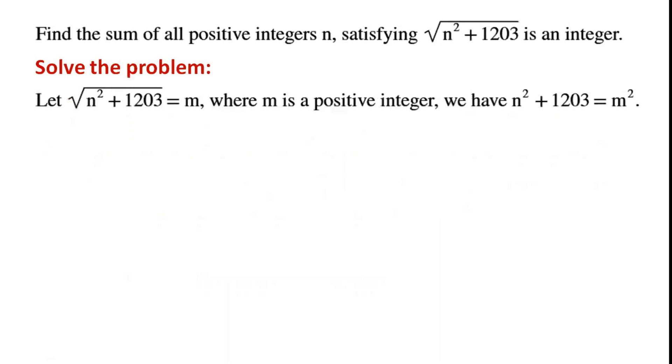Let √(n² + 1203) equal m, where m is a positive integer.